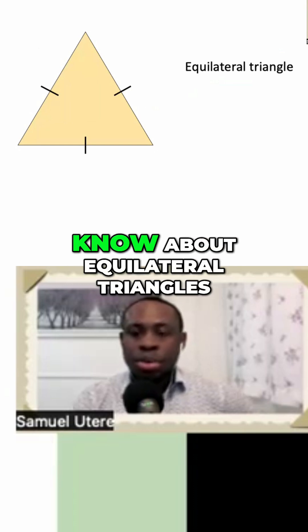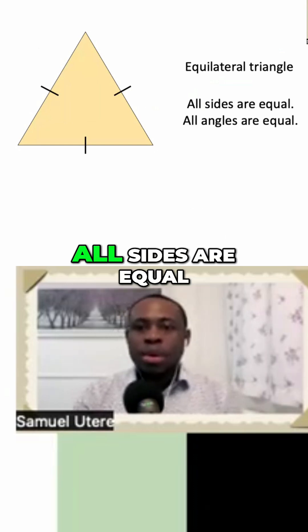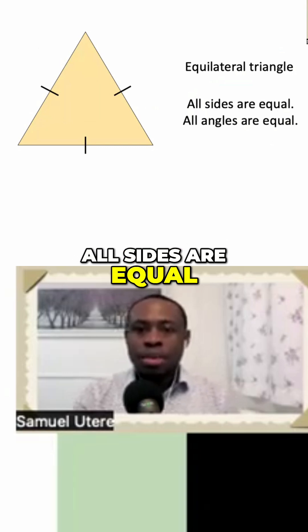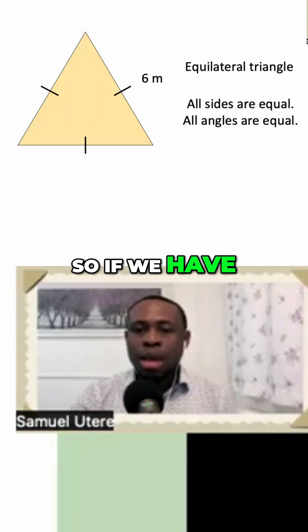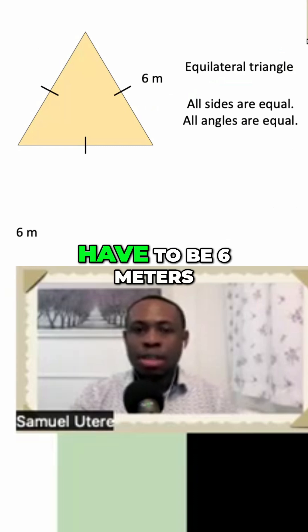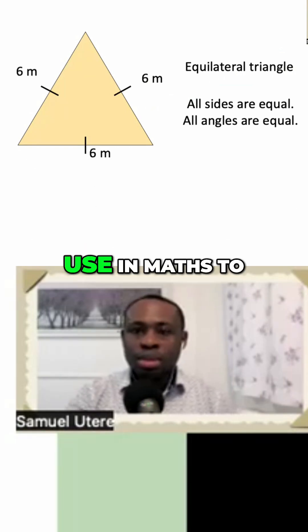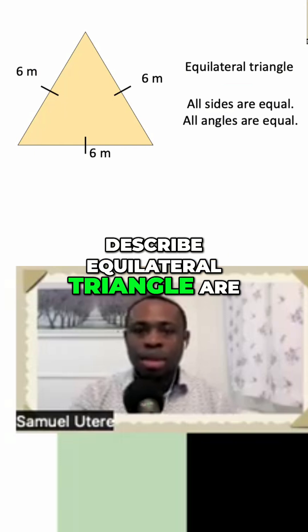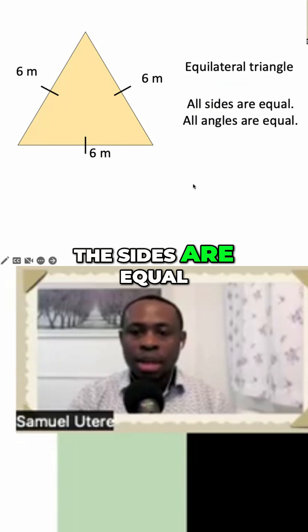Here are some of the things you should know about equilateral triangles. All sides are equal and all angles are equal. So if we have one side to be 6 meters, all the other sides have to be 6 meters. And the notation we use in maths to describe an equilateral triangle are these marks or these notations to show that all the sides are equal.